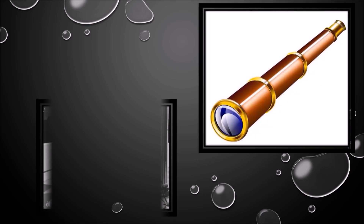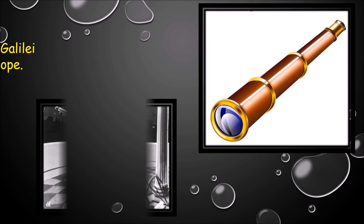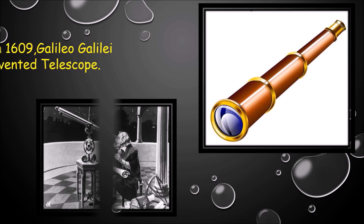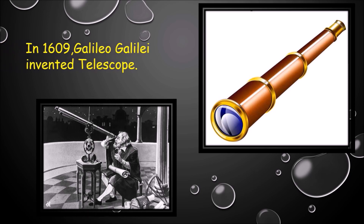This is the telescope. Telescope is used to see the sky, moons, and satellites from the earth. The first telescope was invented by Galileo Galilei in 1609.